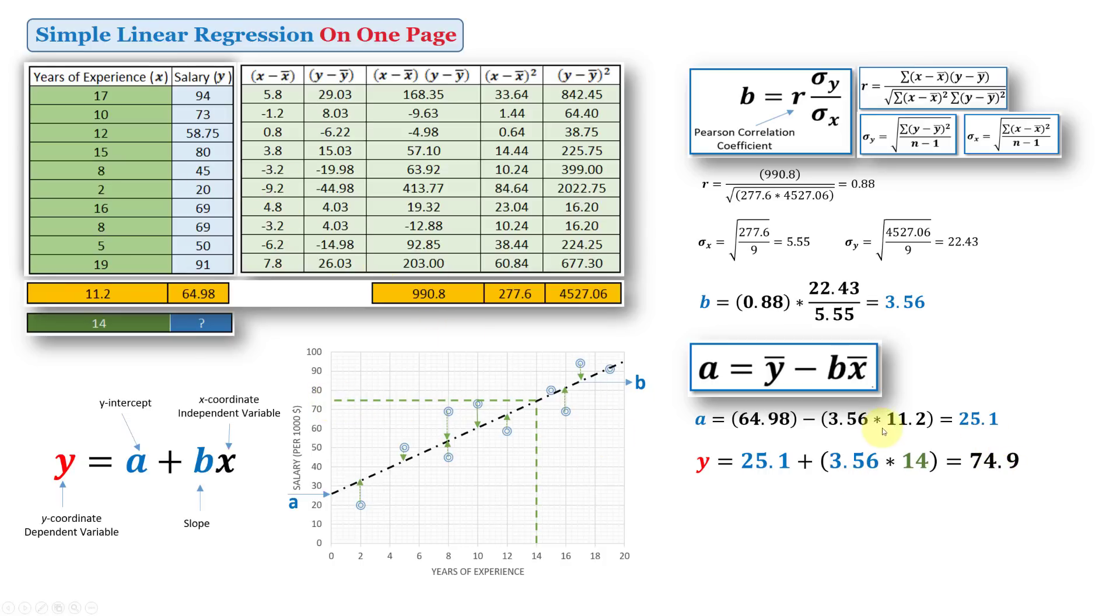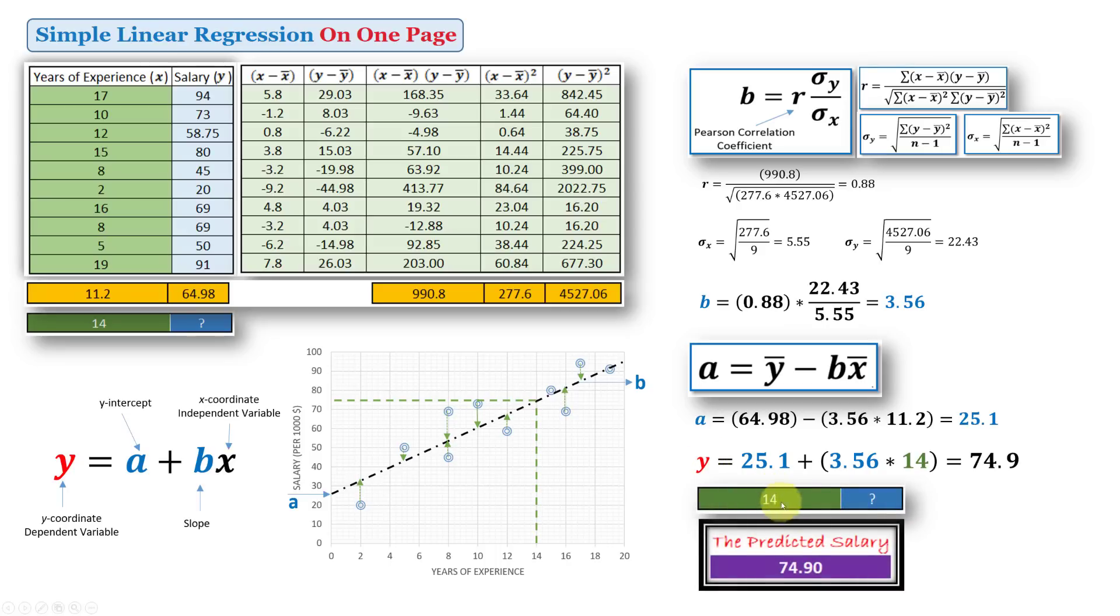So based on this dataset, we built this formula. And now we can keep on changing the value of x, which is the number of years, and the corresponding or the dependent variable here, which is the salary, will be changed accordingly. So in this case, I can try any different number, let's say 15, 16, 20 years, whatever, and I can see the reflection on y straight away. Because y, as we mentioned, is depending on the number of years. In this case, it's easy to use this formula, since we already have a and b, to calculate any kind of salaries given the number of years of experience.